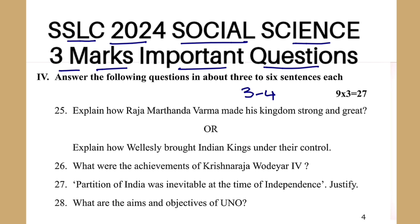We will answer the following questions in about 3-6 sentences each. You should write at least 6 points. Don't put numbers 1, 2, 3, 4 — directly write the answer points only. I will not read the question numbers; directly come to the questions.